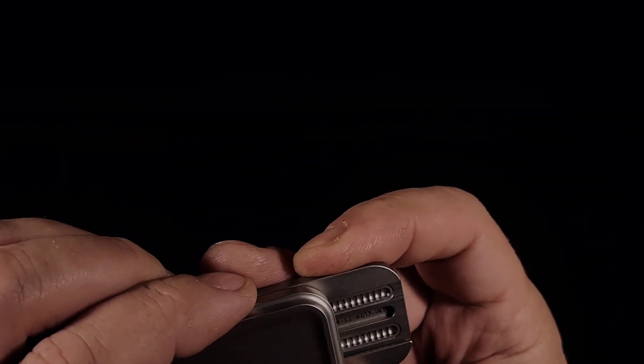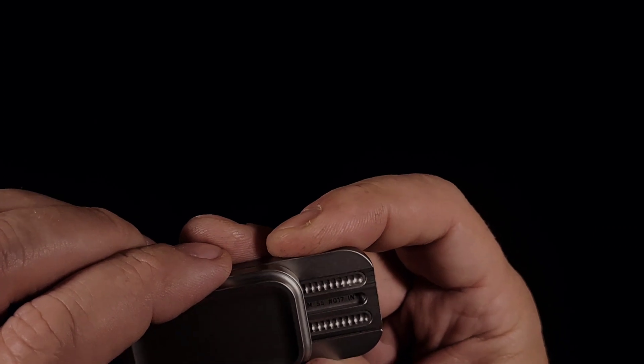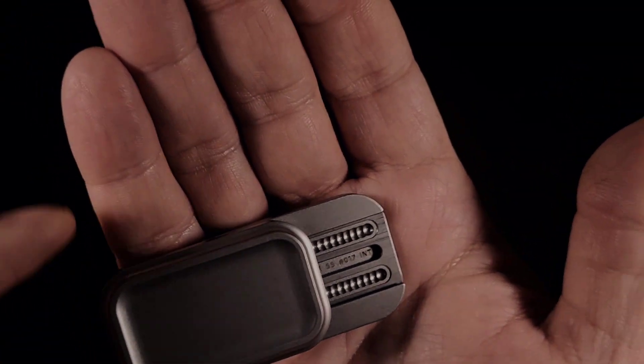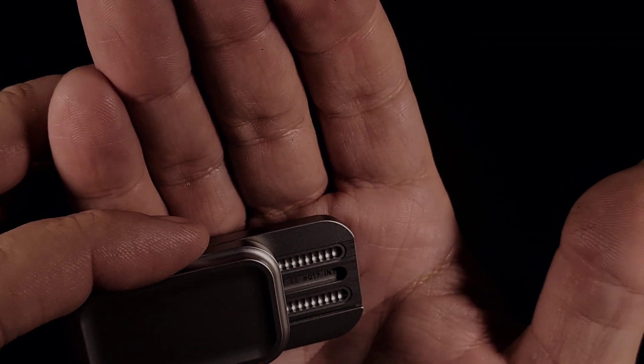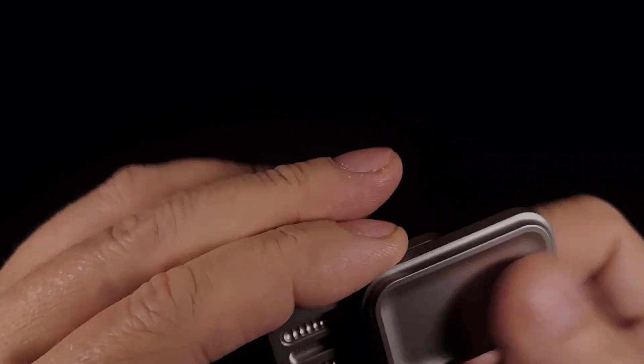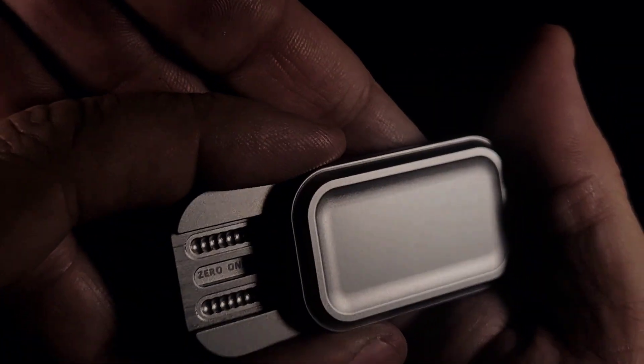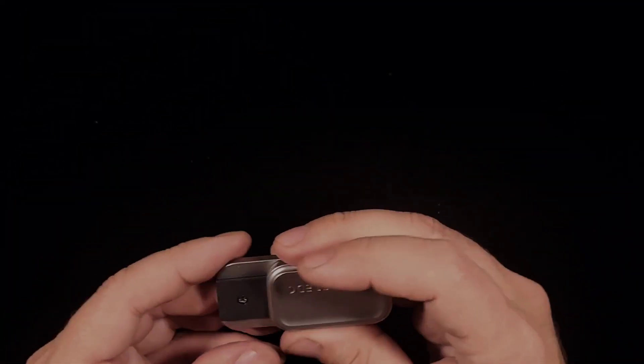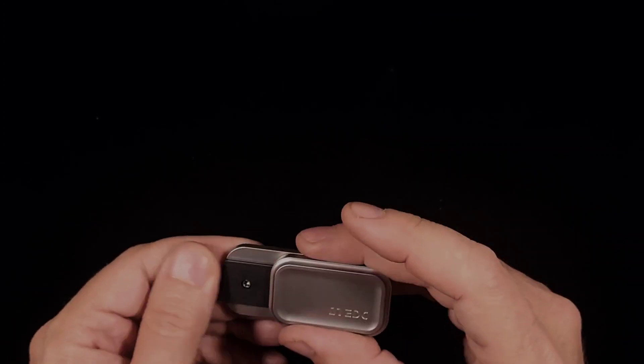You can also see on the inside here is where they've laser etched some information. It's M stainless steel number 017 INT for international. Other side I see 01 EDC down in there. That's where it's been tagged.